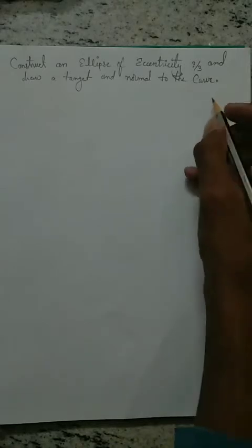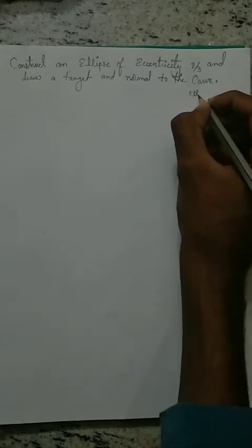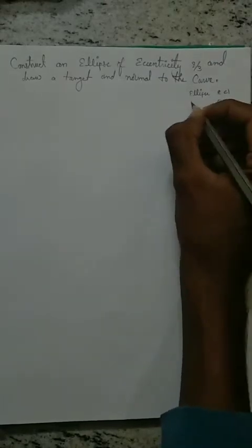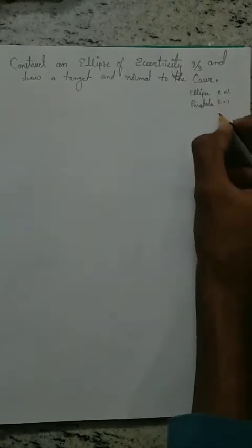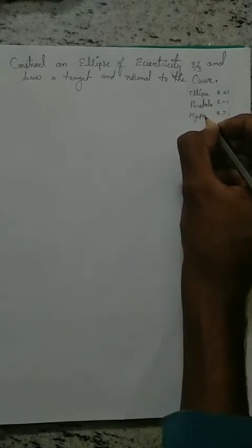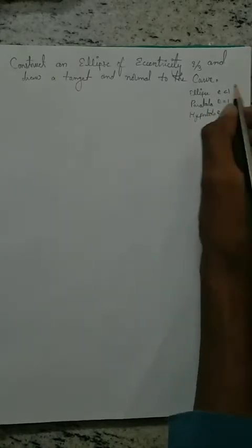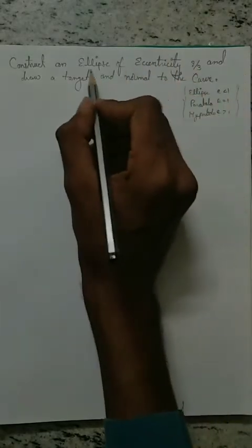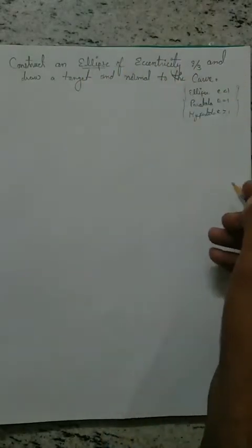The ellipse condition is that eccentricity is less than 1. If eccentricity is equal to 1, then it is a parabola. If eccentricity is greater than 1, then it is a hyperbola. So we check the conditions first. Since 2 by 3 is automatically less than 1, we can use the ellipse for this question.